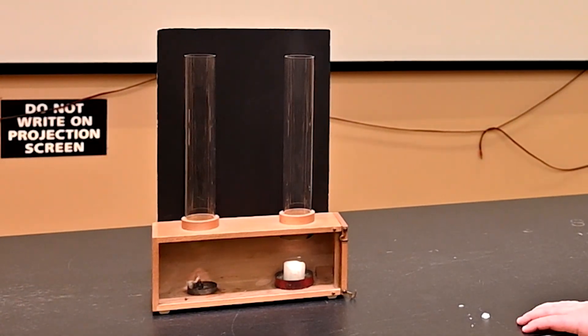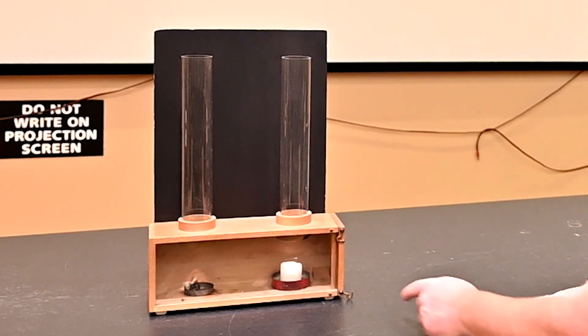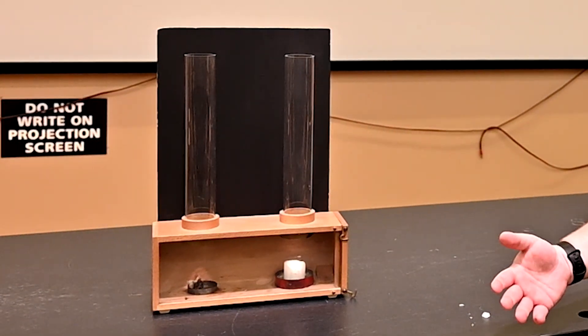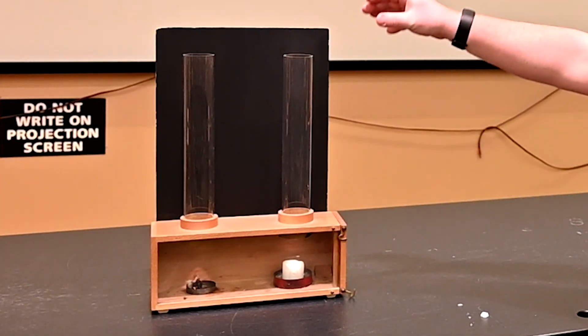The reason that that happens is because the candle is heating up the air. So we have the air heating up and that starts convecting. When the air gets hot, it becomes less dense than the air around it and it starts to rise.